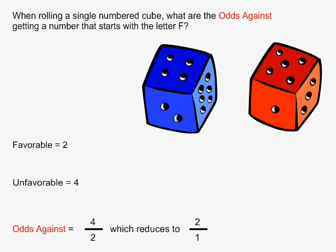In this example, when rolling a single numbered cube, or die, what are the odds against getting a number that starts with the letter F? There are only two sides of the die that have a number starting with the letter F — that is the 4 and the 5. That means the number of favorable cases is equal to 2. There are 4 other sides to the die, so the number of unfavorable cases is equal to 4.